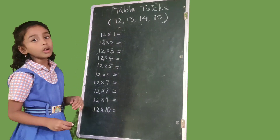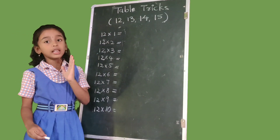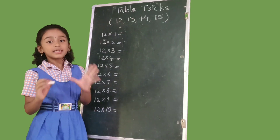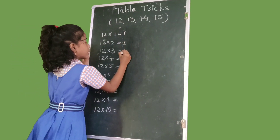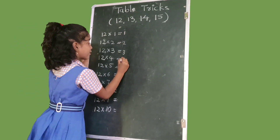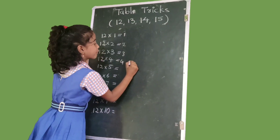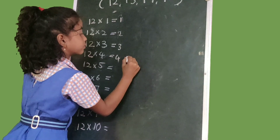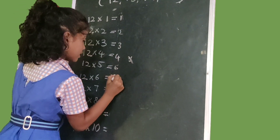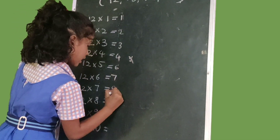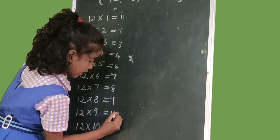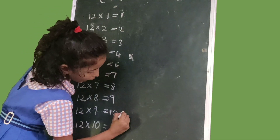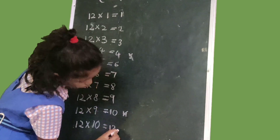So, we write 1 to 12 numbers series: 1, 2, 3, 4, skip 5 number. 1, 2, 3, 4, 6, 7, 8, 9, 10, skip 11 number. Then 12.